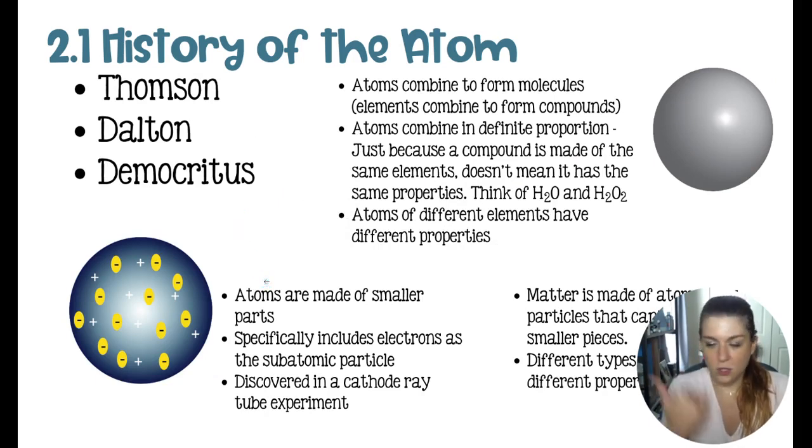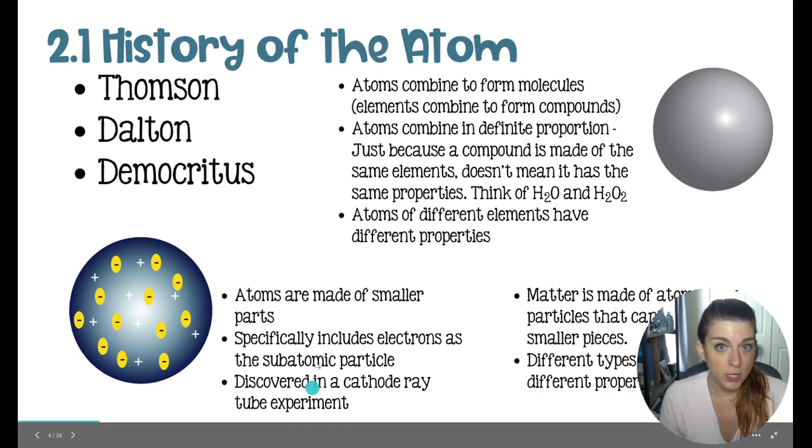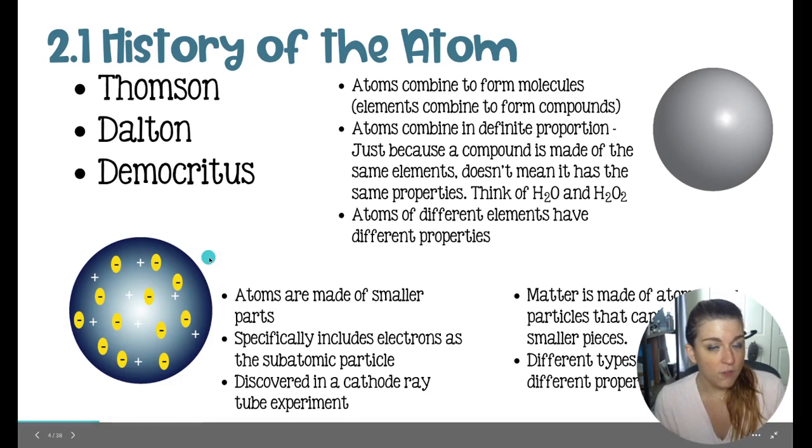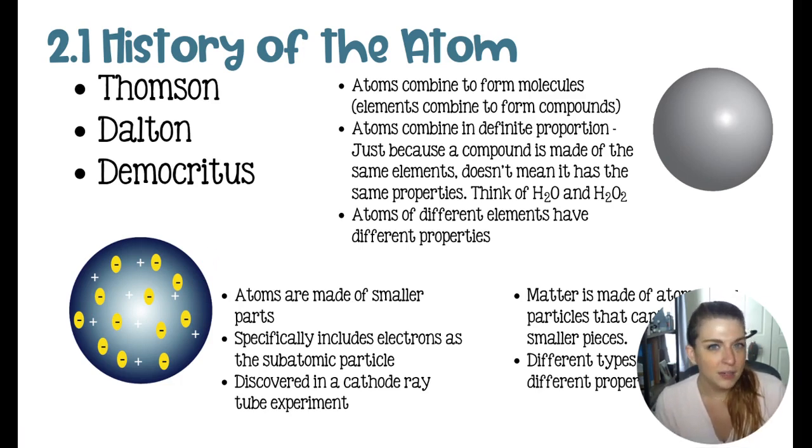Then we have, again, going backwards in time, we have J.J. Thompson and the plum pudding model of the atom. He found the electrons using a cathode ray tube and found that atoms were actually made of smaller pieces. He called them subatomic particles. This told us that atoms were made of smaller parts. Because there were negatives that he had found, the electrons, he assumed that the atom itself was a positive mass with negative electrons distributed throughout, kind of looking like a chocolate chip cookie, although he called it the plum pudding model.